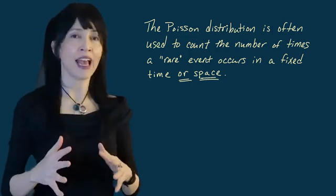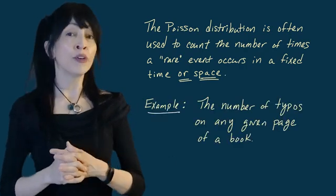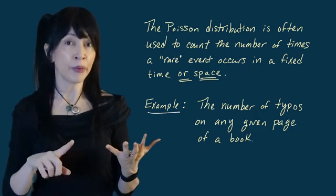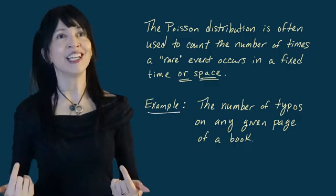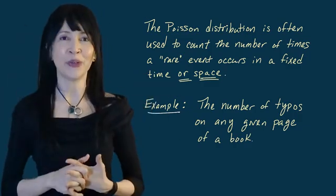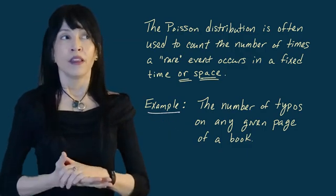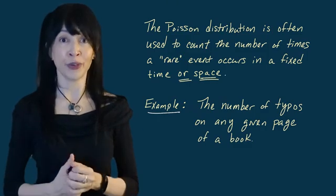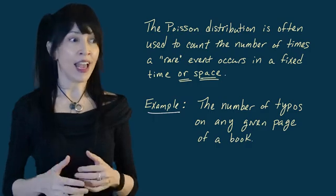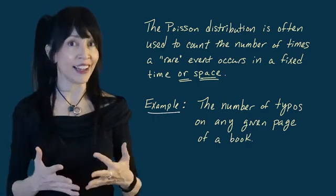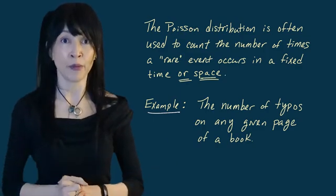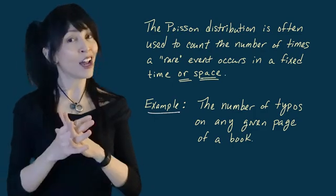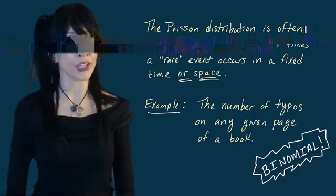One example often given for a Poisson random variable is the number of typos on any given page of a book, like War and Peace. Open up to a random page and look for typos. The Poisson distribution is not a bad model of the number of typos because supposedly they're rare. But that should raise some red flags, because the Poisson distribution does not have an upper bound, and yet the number of typos on a page of a book is going to be finite. So should we really be using a Poisson distribution to count typos? Yes, it's not a bad model — and the reason is the Poisson distribution's connection to the binomial distribution.